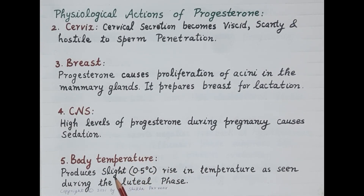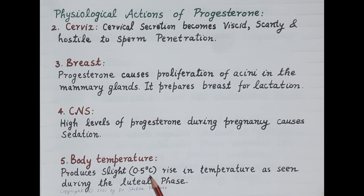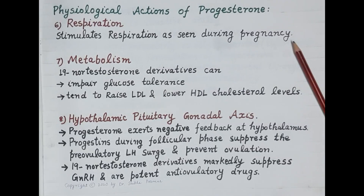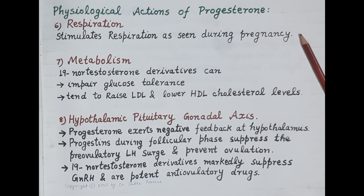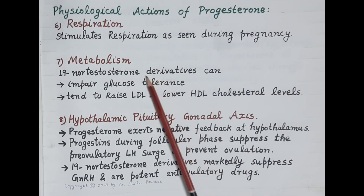Progesterone also slightly increases body temperature — approximately a 0.5 degree centigrade rise — and this is seen during the second half of the reproductive cycle, that is, during the luteal phase. Apart from this, progesterone stimulates respiration during pregnancy.